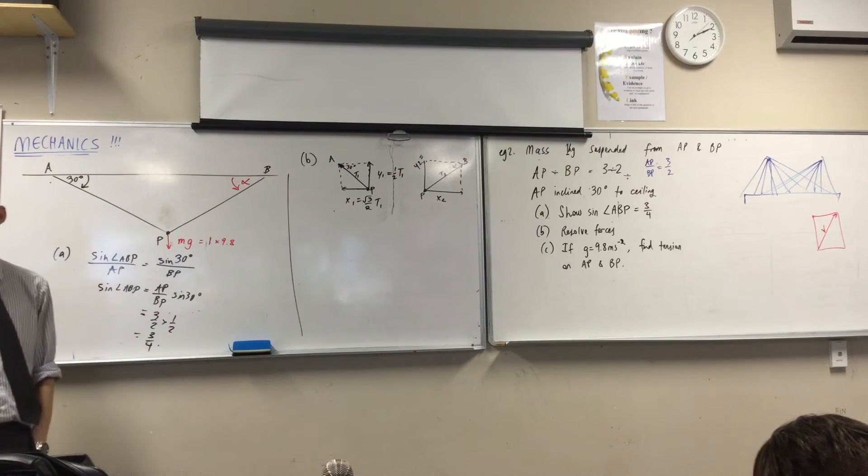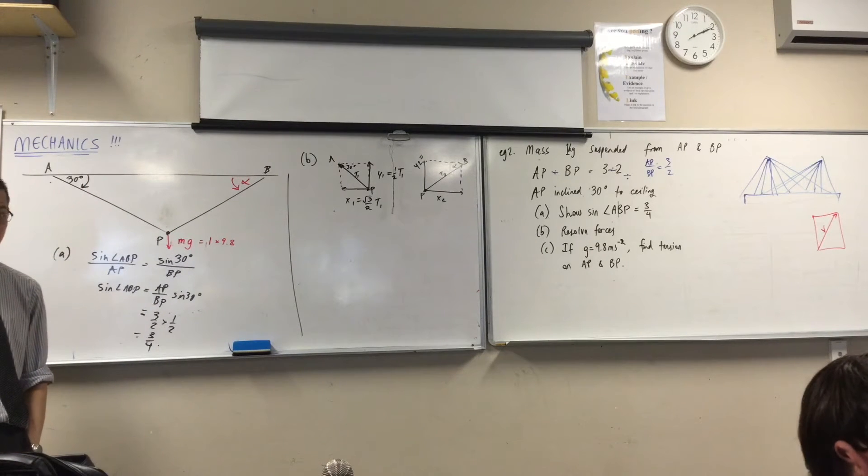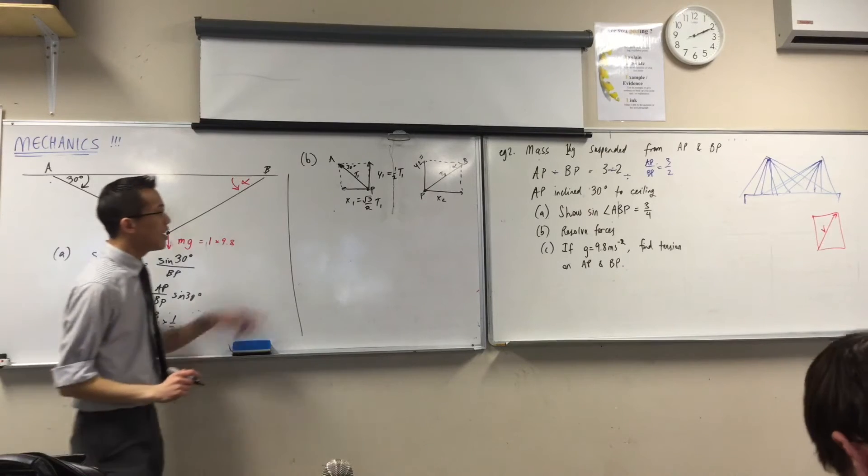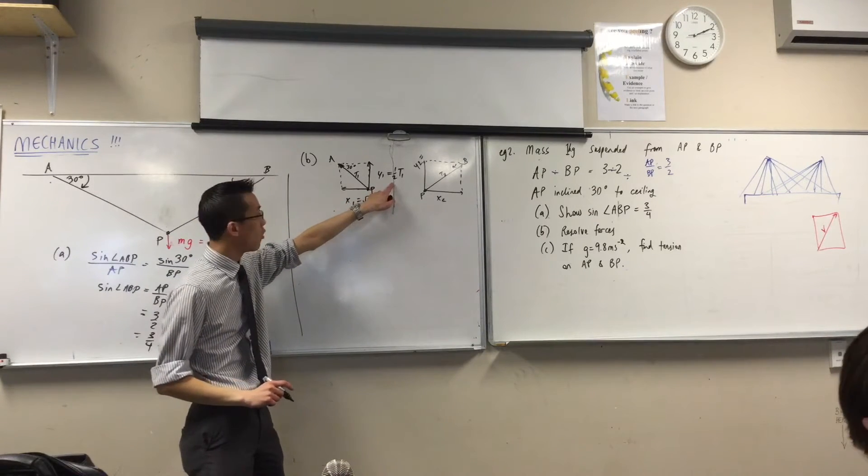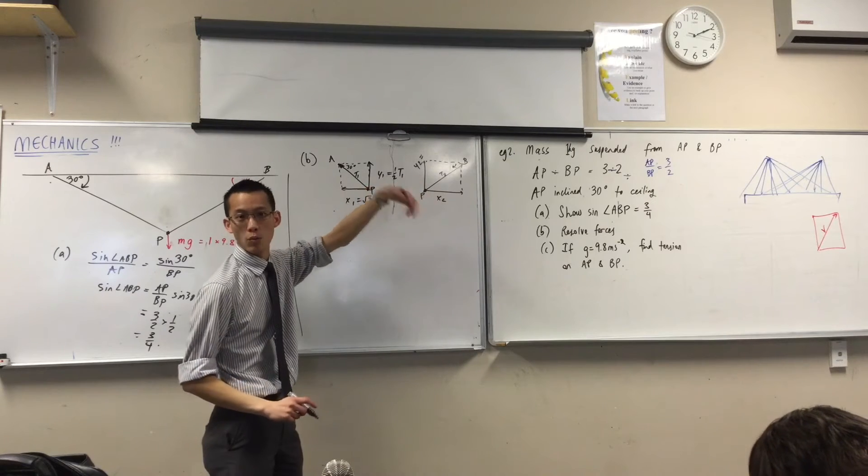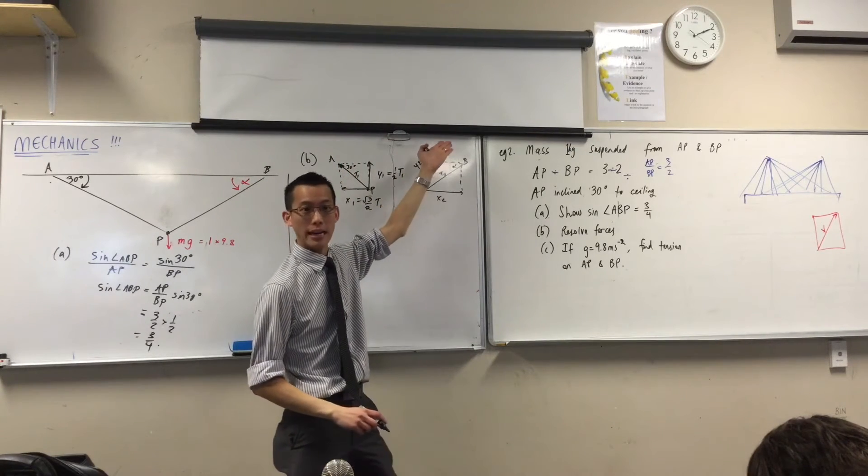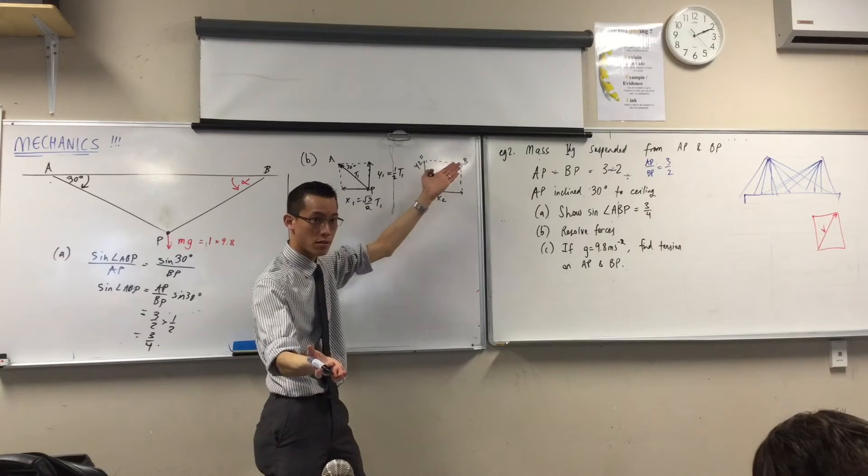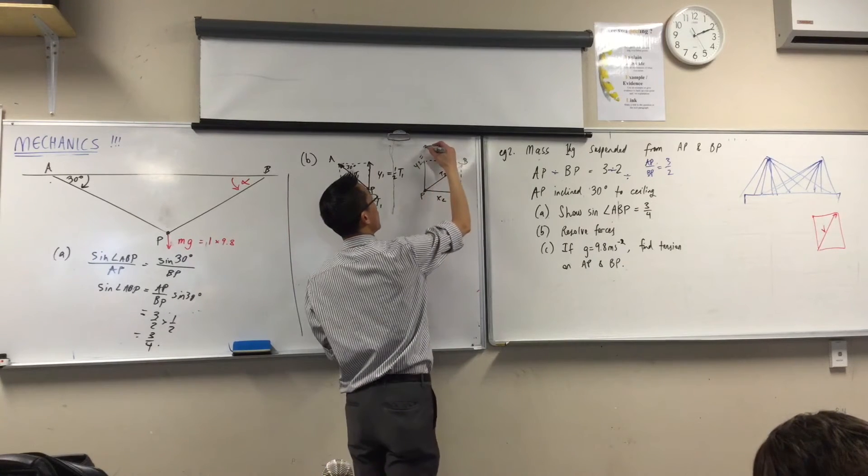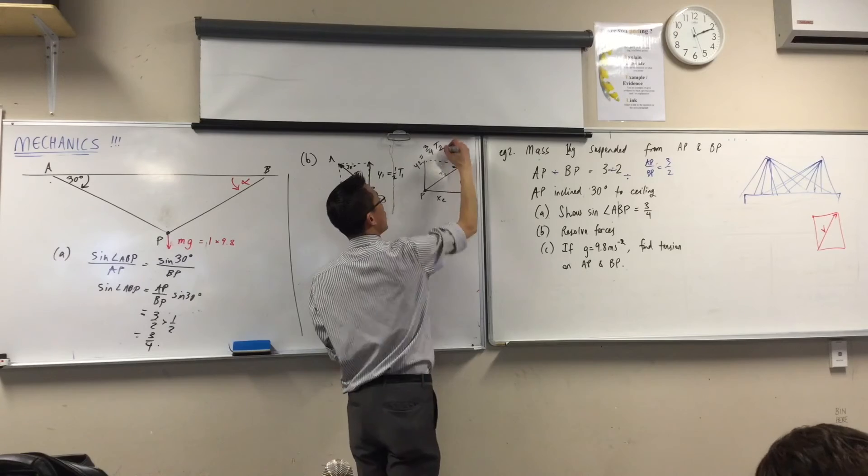Let's do the vertical component first because it's easier, because you already know something about the vertical component. In exactly the same way as I did before, this vertical component is going to be T1 sine whatever. So here I'm going to get T2 sine alpha, which of course is 3 over 4. So far so good?